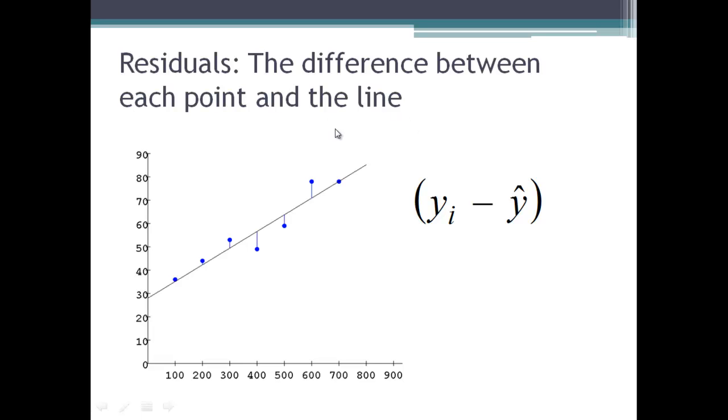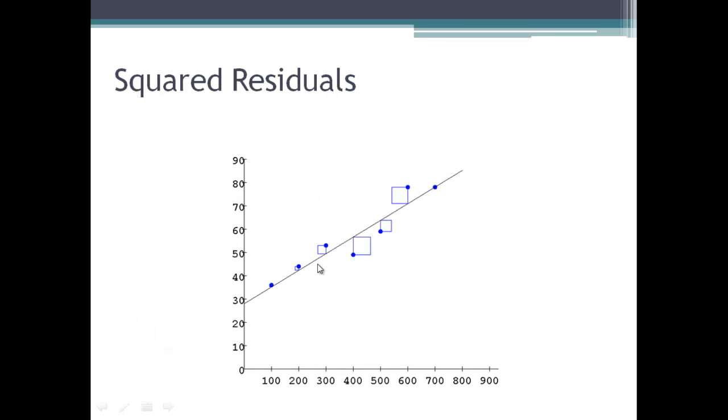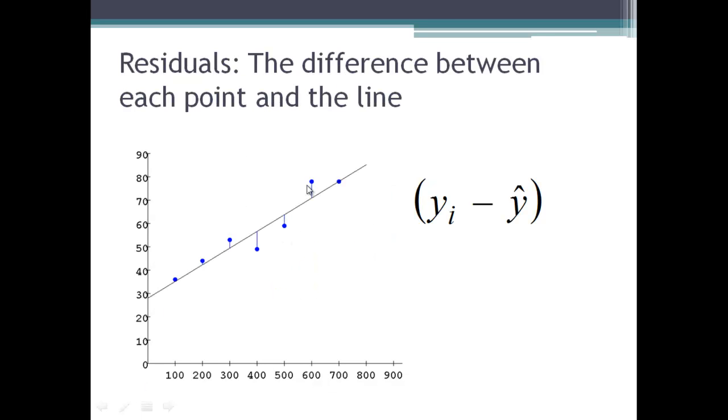Just like we took deviations from the mean, now we're going to get residuals. It's the same sort of thing, but it's the difference between the line and each individual point. Now we're going to call these residuals to distinguish them from deviations, which are differences from the mean. Now we're looking at differences between each point and the line, or the y sub i minus the y hats. In our book, I think they put a y sub i here. That just means that this deviation is at this point for x.